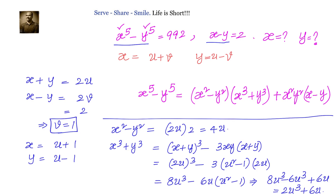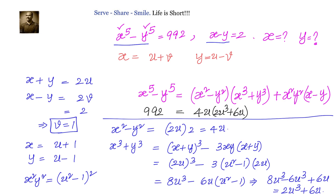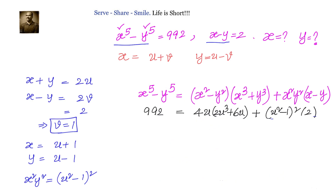We also need x squared y squared. Since xy equals u squared minus 1, x squared y squared equals u squared minus 1 whole squared. Now we can substitute all these values back: x power 5 minus y power 5, which equals 992, becomes 4u times 2u cubed plus 6u, plus u squared minus 1 whole squared times x minus y, which equals 2. Let us simplify this equation to find u, from which we immediately get x equals u plus 1 and y equals u minus 1.